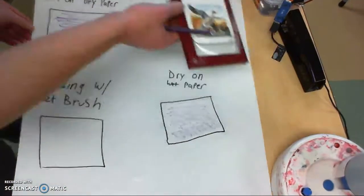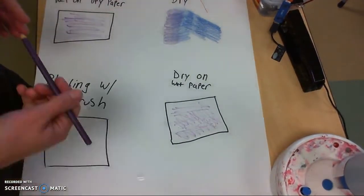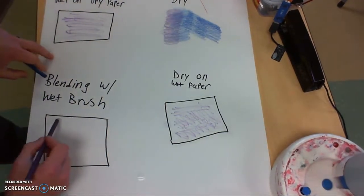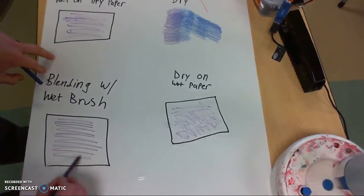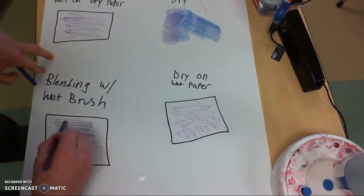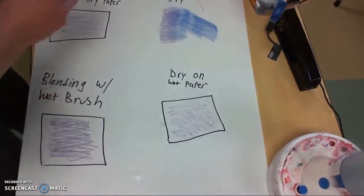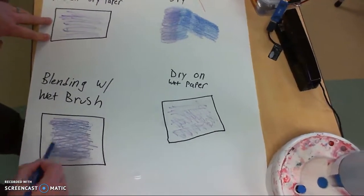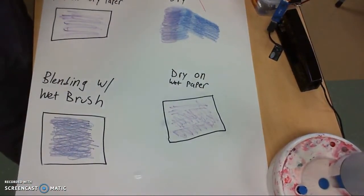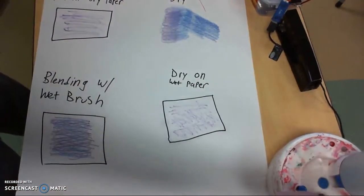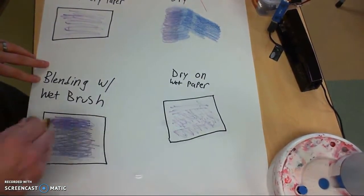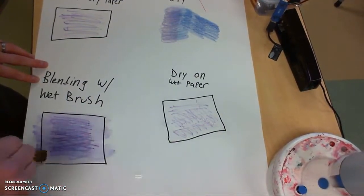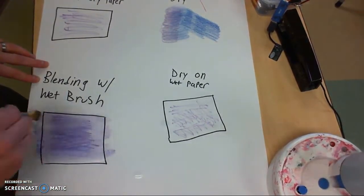And then finally, the last effect is I can draw with my pencil and then blend it with a wet brush. So I'm going to put some purple down first and then I'll take my blue right on top. Then I'm going to use my wash brush again, the big wide one, and go over it with the brush. You can see that it also moves some of the color a little bit.